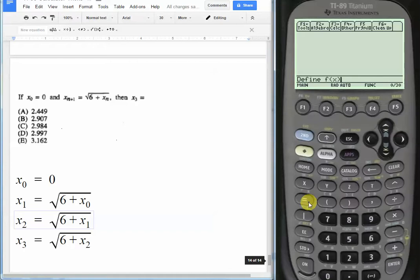f of x equals radical 6 plus x. Close that parentheses, hit enter. We can see the calculator says that it's done, meaning it accepted our defined function.